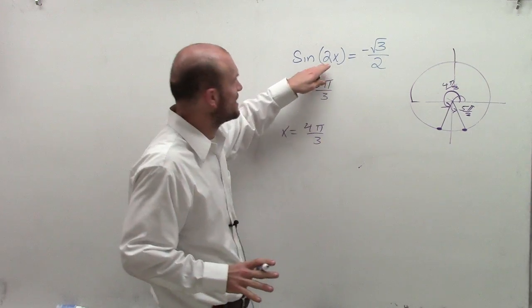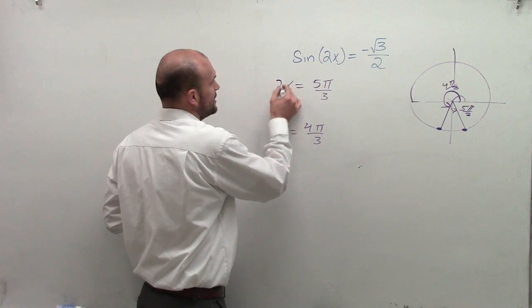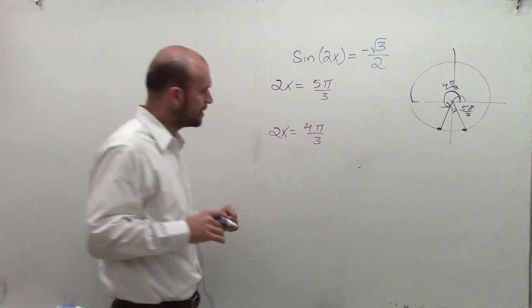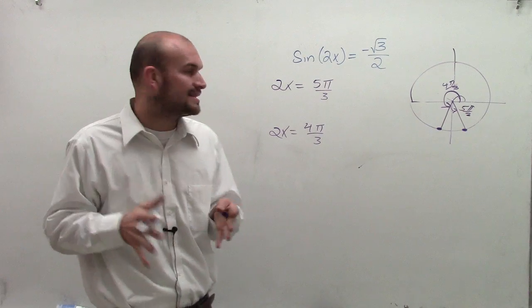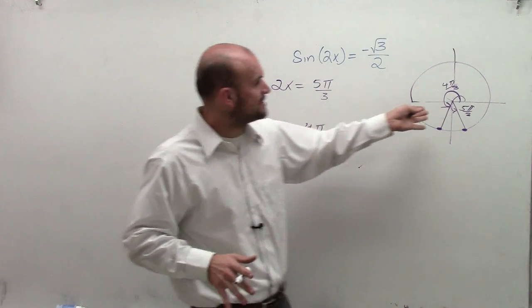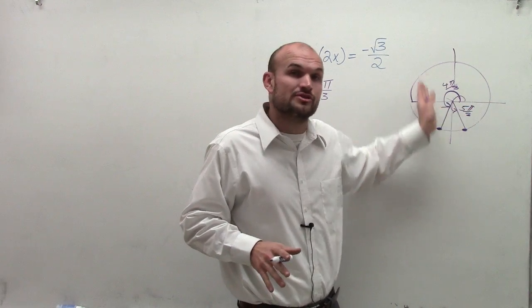However, we're not trying to find the angle of just x. It's actually 2x. So then the next thing that we need to look at is these are my two angles that are on the interval of 0 and 2 pi.